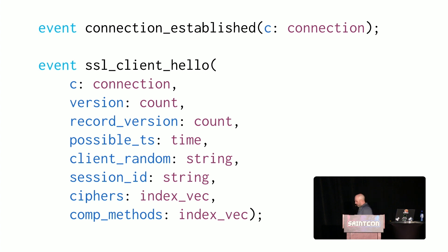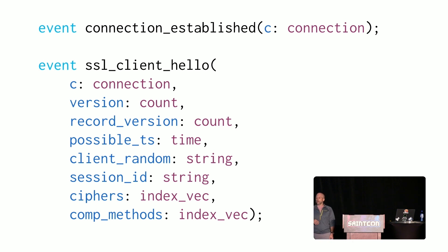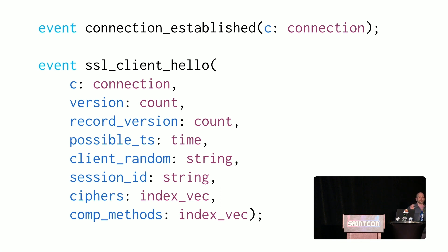Here's another example based off a TLS client hello. If you're familiar with TLS exchange, you have the client hello and the server hello. This is also what JA3 and JA3S are based off of. You have that connection record again, plus version, record version, and a few other data types. You'll start to notice that some of these are actual data types like time, string, or count — which is relative to integer.